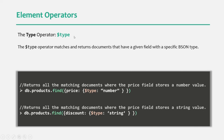Then we have the type element operator. This operator matches and returns documents that have a given field with a specific BSON type. For example, in the products document, the price field can store a number value or a string value. We want to filter all the products where the price field is storing a numeric value. For that, to dollar type we can assign the data type, which is number, or we can also assign decimal or double. And if we want to filter where the price field stores a string value, we specify string to the dollar type operator.